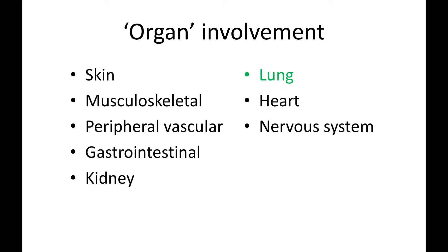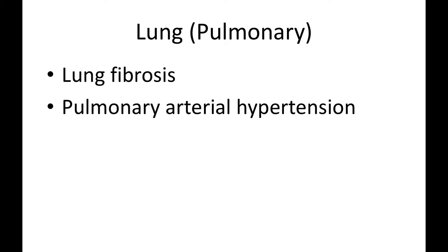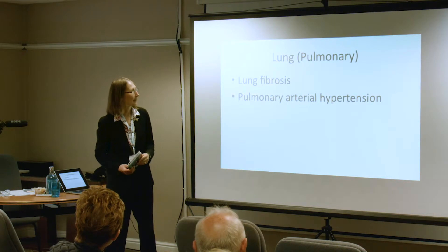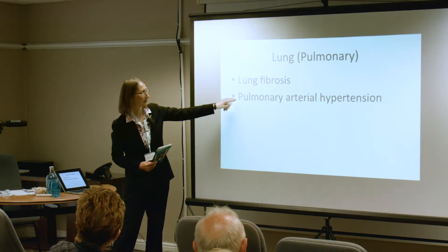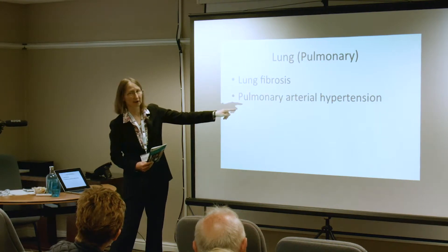So then we come to the lung involvement. The lungs are commonly affected in scleroderma but sometimes it's really very minor. You can have very minor degrees of lung involvement but unfortunately you can have much more severe forms. There are two major types of lung involvement: one is fibrosis, the scarring of the lungs which starts off at the bases, and the other is a condition called pulmonary arterial hypertension.